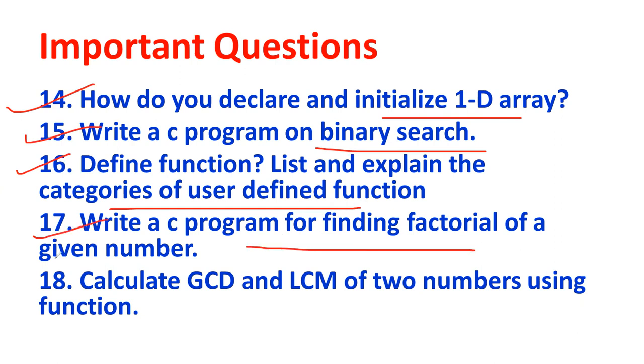Write a C program to find out the factorial of a given number. Then calculate the GCD and LCM of two numbers using the function. Mention the example so that people will understand. Those who are evaluating will understand very clearly. So you can manage it very easily.